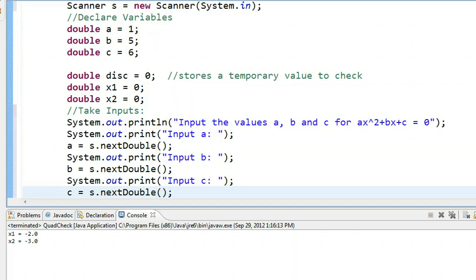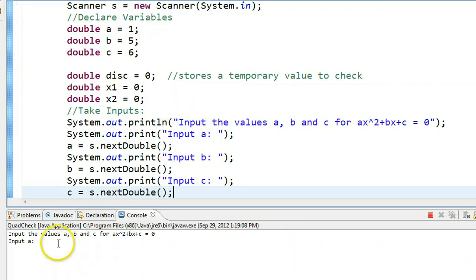Now if I run this, input the values of a, b, and c for a squared plus bx plus c, so input a, so we're going to put 1, enter, input b, 8, enter, c, 16, enter, there's one real root at x equals negative 4.